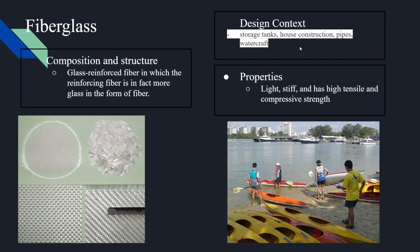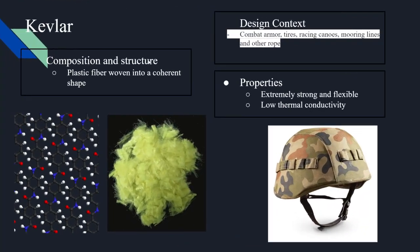Kevlar is extremely strong and flexible with low thermal conductivity. It consists of plastic fibers woven into coherent shapes — you can see many hexagonal joining bonds in its structure. Examples of raw Kevlar and its applications in military equipment include combat armor, tires, racing equipment, and ropes. For combat armor, it is extremely strong enough to potentially stop a bullet, yet flexible enough for practical use.